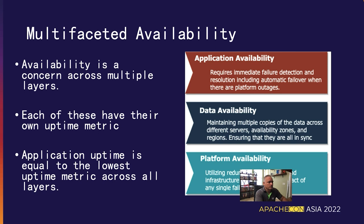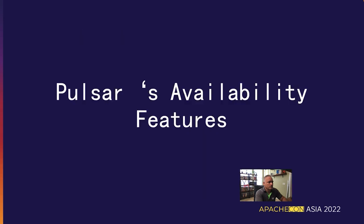From an application perspective, it is incumbent upon your application to be able to immediately detect a failure in the system and automatically switch over to the active platform in a seamless manner. Let's start with a quick review of all of Pulsar's availability features already available inside the platform prior to the 2.10 release.